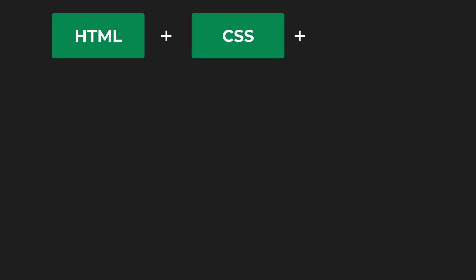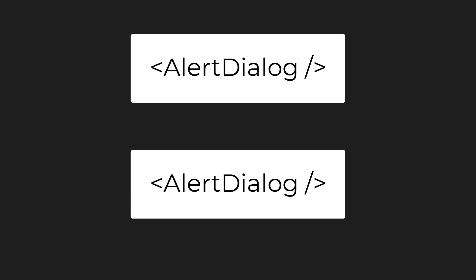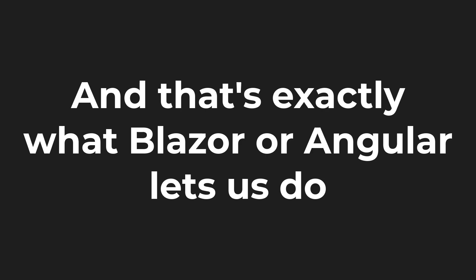Now, what if we can somehow combine the HTML markup, CSS styles, and the logic for our dialog into a single unit called a component and give it a name — say, alert dialog? Then we'll be able to use that component name 'alert dialog' as an HTML element wherever we want, instead of having to copy and paste the entire HTML markup. And that's exactly what Blazor or Angular lets us do.